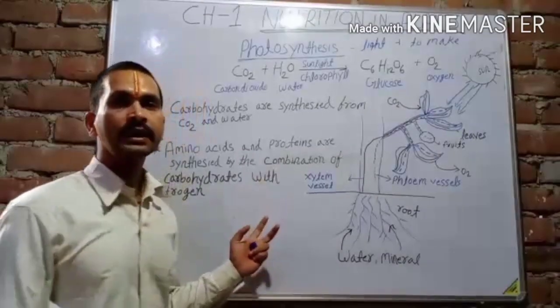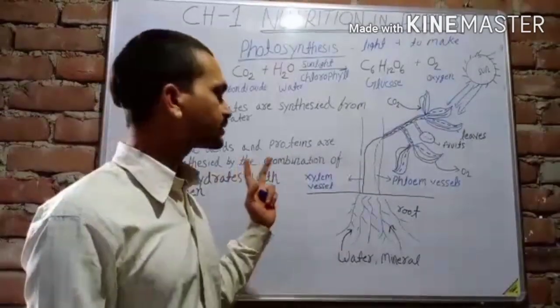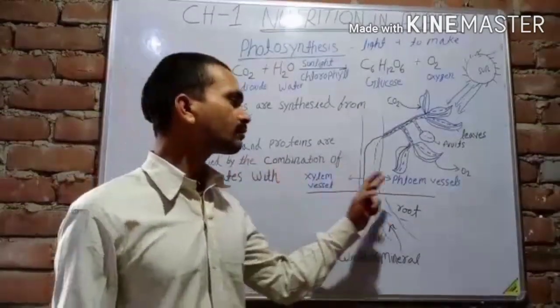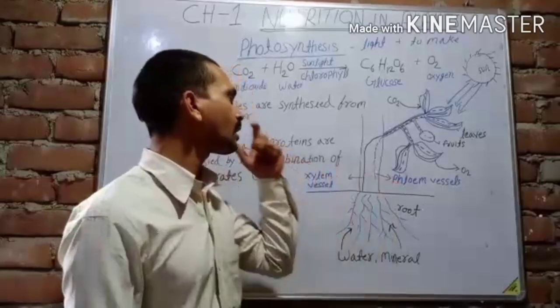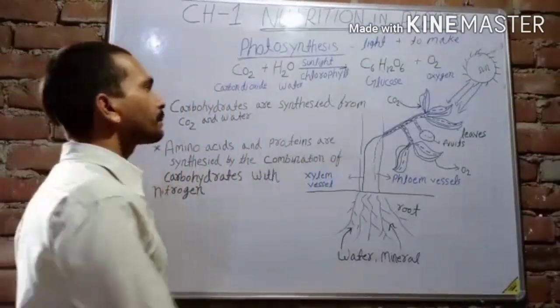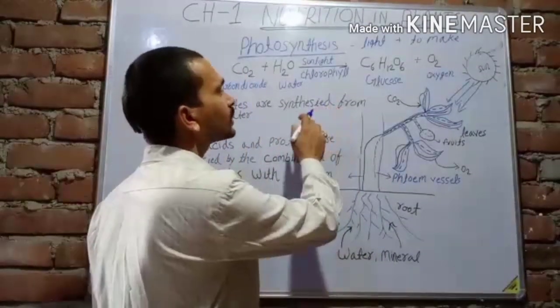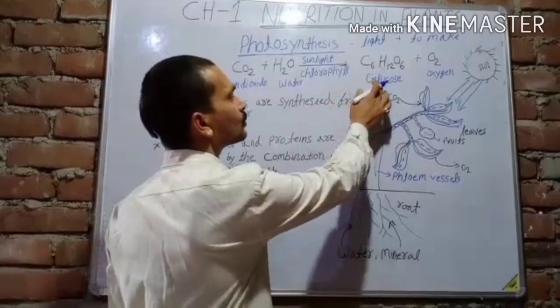How many vessels are in a plant? There are two vessels: the xylem vessel and the phloem vessel. When plants make their food, this food is known as glucose.